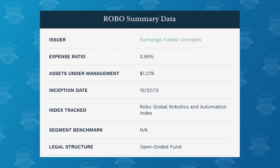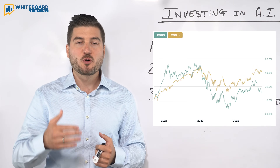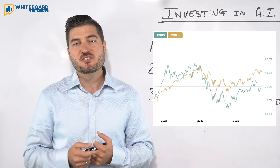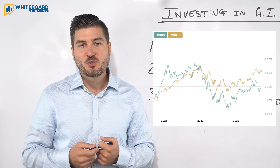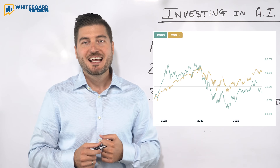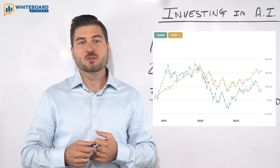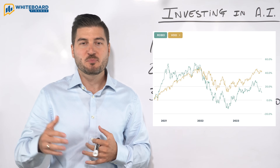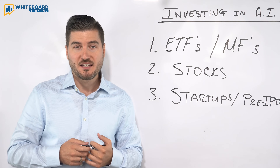Next, we have the Robo Global Robotics and Automation Index, ticker symbol ROBO. This invests in companies focused on robotics, automation, and artificial intelligence, investing in both growth and value stocks. This fund's expense ratio is 0.95%, a little bit on the higher side, and it has an annual dividend of only 0.17%.